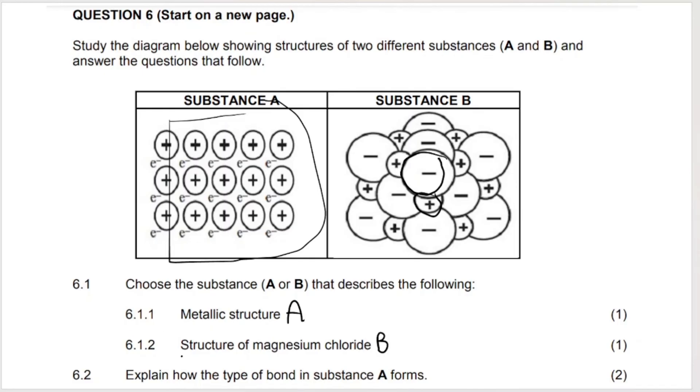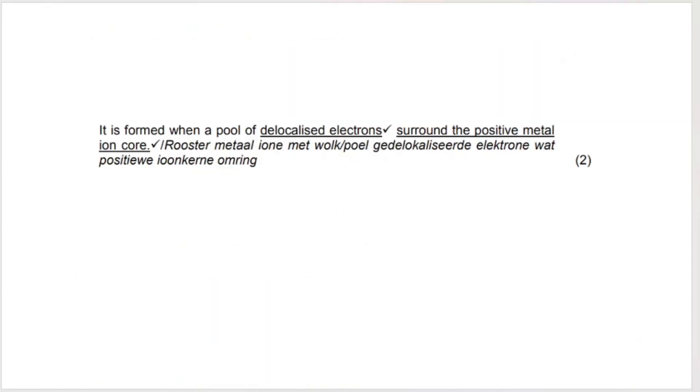And then they say, explain how the type of bond in substance A forms. In other words, explain how metallic bonding works. And it's literally just what we went through. So here's the memo's answer, just so you can see. It is formed when a pool of delocalized electrons surround the positive metal iron core. So instead of saying positive kernel, they say positive metal iron core, which is probably better. And why is it positive? Because remember the electrons have been lost, not lost, but they are separated from the atom and they are now delocalized.